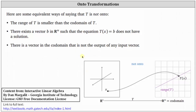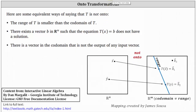Let's look at a second mapping that represents a transformation that is not onto. A transformation is not onto if there is a vector in the codomain that is not the output of any input vector. Notice here that vector b_3 does not have a corresponding input vector, and therefore this is not an onto transformation. The range is less than the codomain.